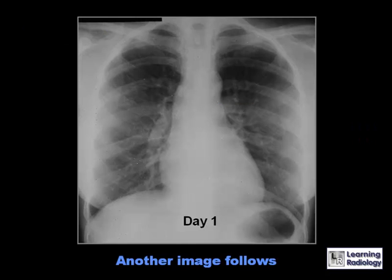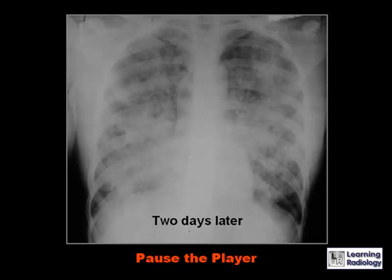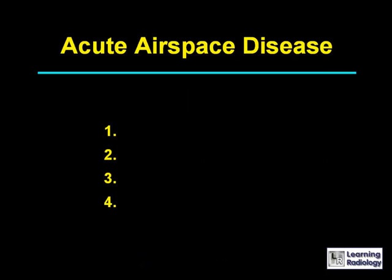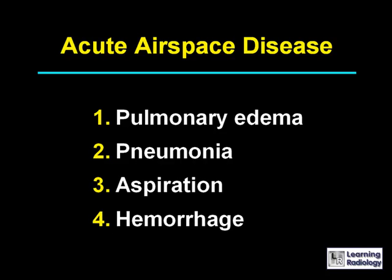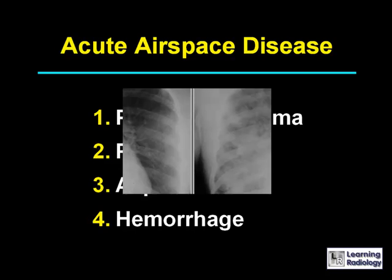This is the second differential: acute airspace disease. There are four causes: pulmonary edema, pneumonia, aspiration, or hemorrhage.